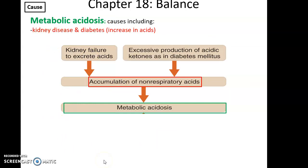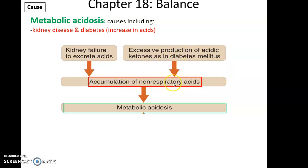Acidosis could also be caused by metabolic acidosis — from kidney disease and diabetes. The kidneys may fail to excrete acids and hydrogen ions, so the blood pH remains low. Or someone with diabetes mellitus may have excessive production of acidic ketones, increasing the amount of acid in the blood, which accumulates and leads to metabolic acidosis.